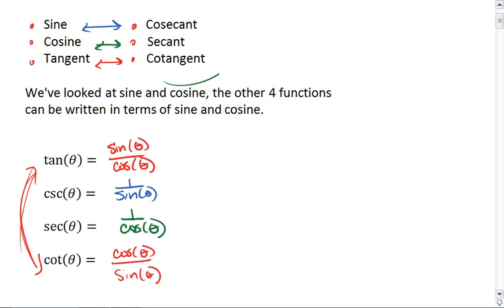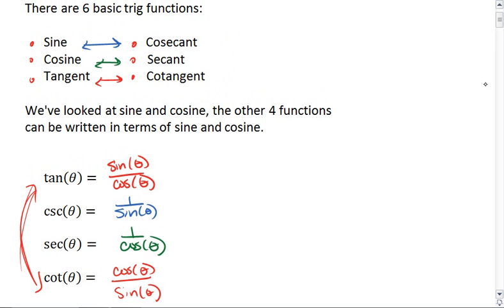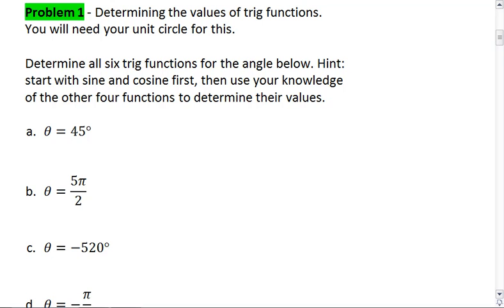So we see that everything in the second column is a reciprocal of its match in that first column. And all you have to remember then is that tangent is sine over cosine. Let's go ahead and jump right into a problem.